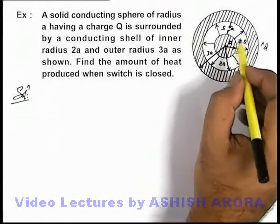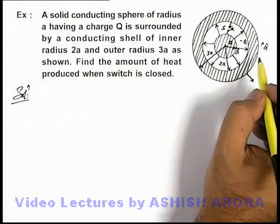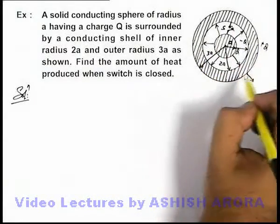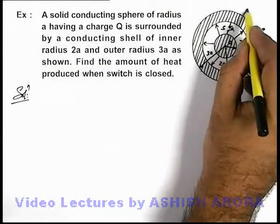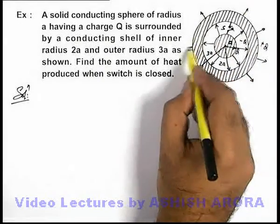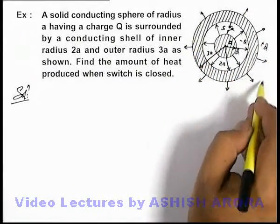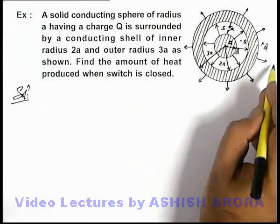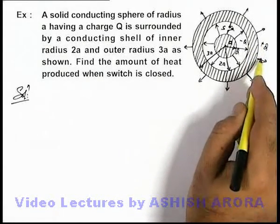When the switch is closed, the whole charge flows to the outer surface. As the total charge of the system remains the same, the electric field in the outside region will remain the same before and after closing the switch, because earlier also this electric field configuration was due to a positive Q charge induced on the outer surface.